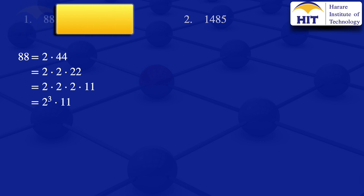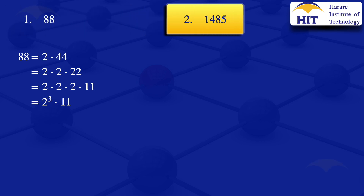Moving on to question number 2: the prime factorization of 1485. Looking at 1485, I start with the smallest prime, 2, but 2 is not a factor. I move on to the next prime, 3. The 3 is a factor of 1485, so we can write 1485 = 3 × 495.